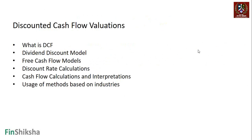We start with the concept of DCF and then build on the various kinds of DCF models — namely the dividend discount model and the free cash flow models — covering how to calculate discount rates, cash flow calculations and interpretations, and usage of methods based on industries. A primary chunk of our discussion will focus on how to calculate cash flows and what methods to use for different industries and companies.